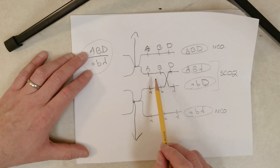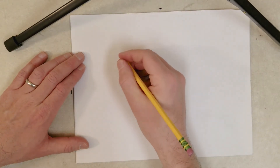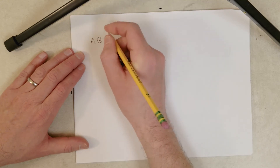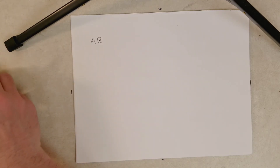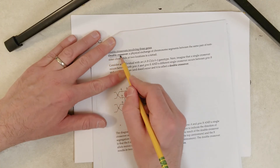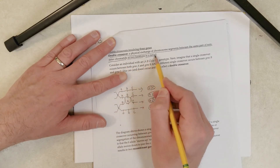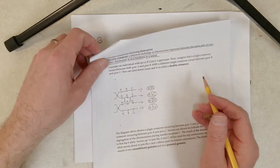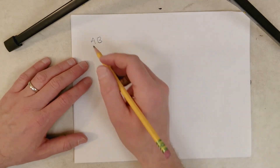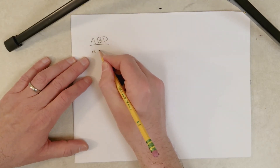So we saw what happens when we get a single crossover in interval one, and a single crossover in interval two. Now let's see what happens when we get a double crossover. What is a double crossover? The definition is: a physical exchange of chromosome segments between the same pair of non-sister chromatids at two locations in a tetrad. It's a neat definition that accurately explains a double crossover. Let me diagram the double crossover for you.